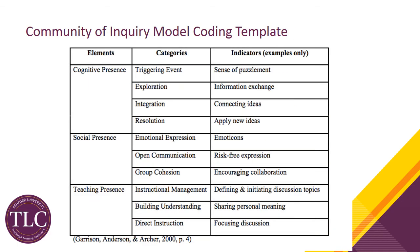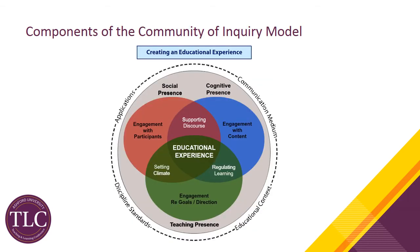Here's the coding template showing the categories within the three presences, as well as some examples of the indicators of these presences within the categories. This is a widely used diagram showing the three presences and how they intersect. The overlap of social and cognitive presence is supporting discourse. The overlap of cognitive and teaching presence is regulating learning. The overlap of teaching and social presence is setting climate. All of this takes place in a context that includes the communication medium, the educational context, the standards of the academic discipline employed, and the applications of learning. At the center is the educational experience.